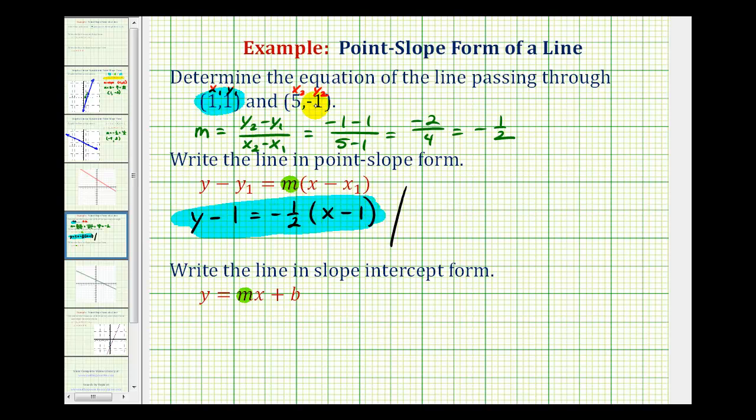But we could also use this point here that's on the line. So let's go ahead and do that. And notice that the Y coordinate is negative 1. So in this form, we would have Y minus negative 1, which would be Y plus 1, equals M negative 1 half times the quantity X minus X sub 1, which is positive 5, so we have X minus 5.